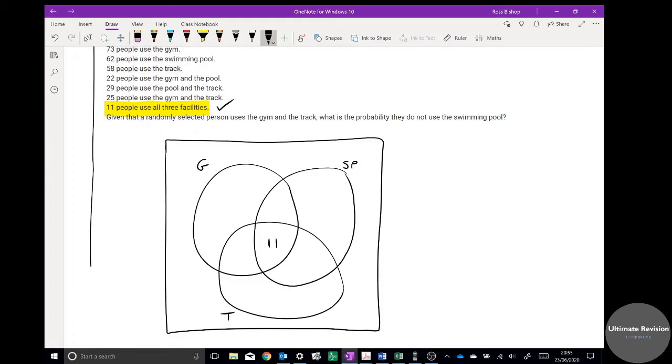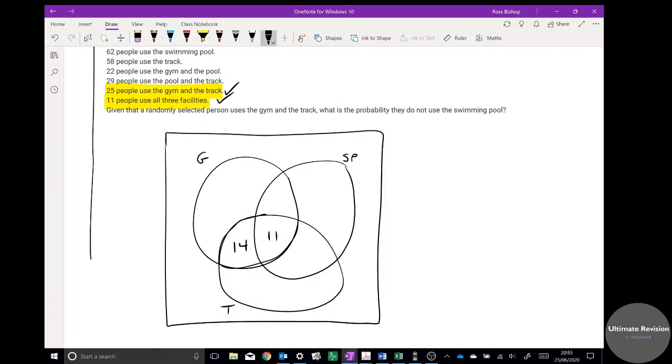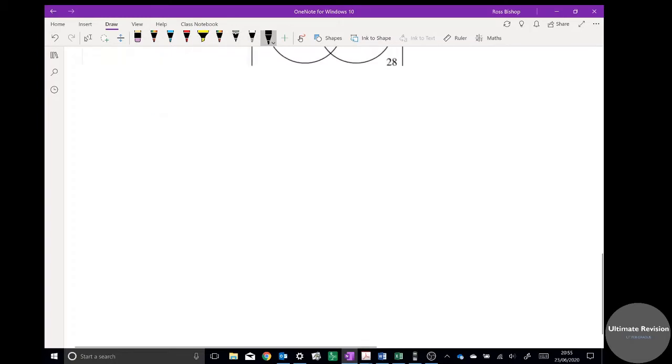We've got 11 that use all three, so 11 goes in there and I can tick it off as I go. The next one, 25 people use the gym and the track, so gym and track is going to be this bit here. So 25 means that must be 14 because the total of that must be 25. Tick that one off. 29 use the pool and the track, so swimming pool and track, that's this column here. We've got 29, so that must be 18 goes in there. Tick that one off. We've got 22.